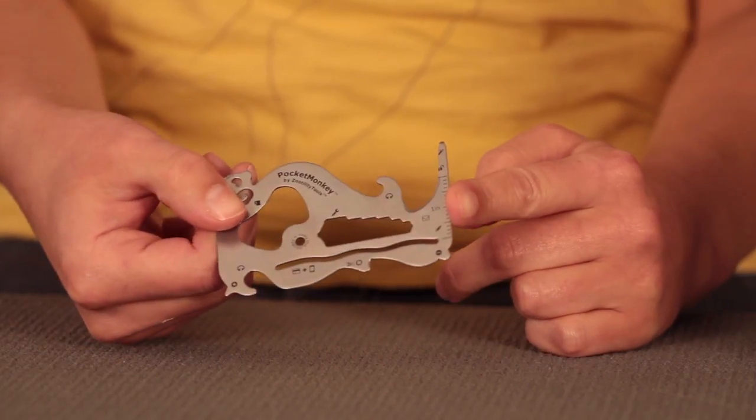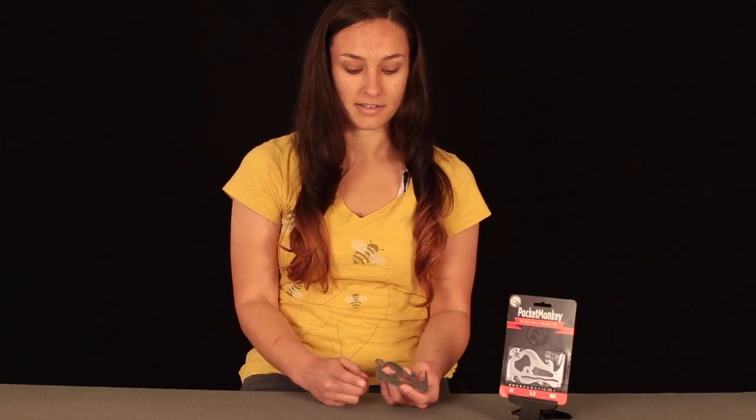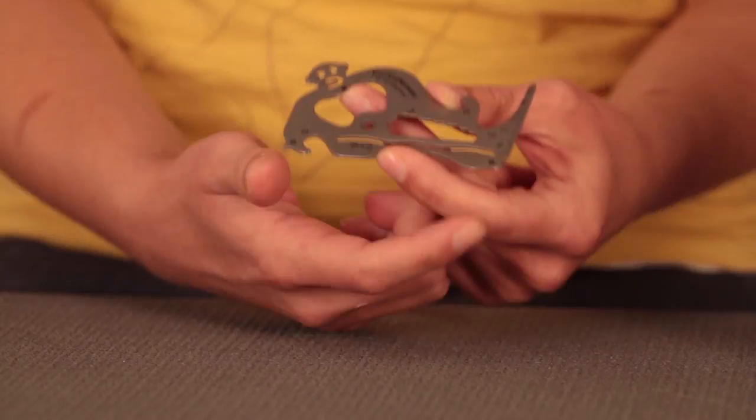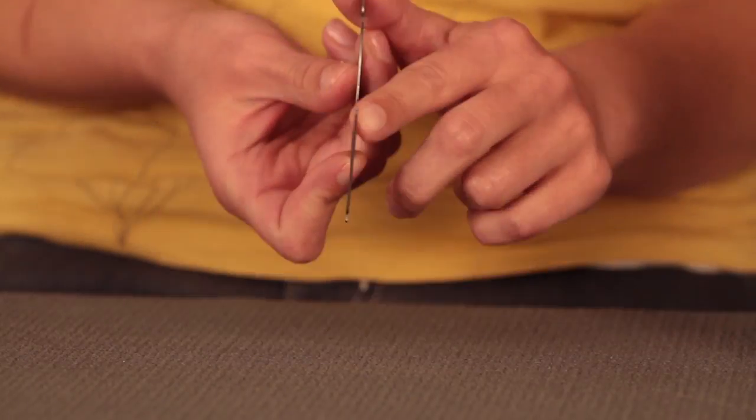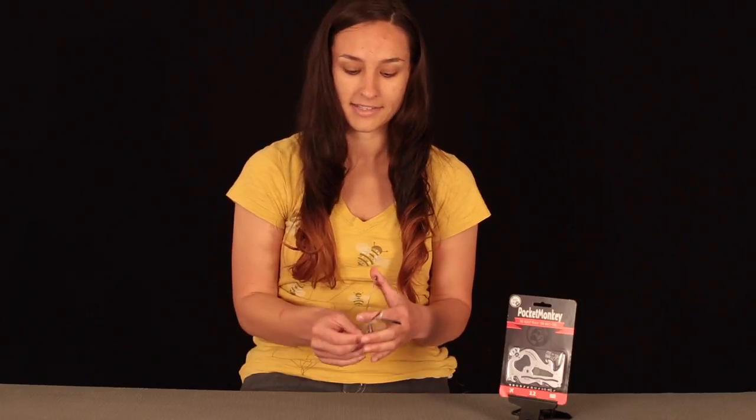Most importantly, it has a bottle opener here. One inch ruler on this side, on the other side it shows it in millimeters. A couple screwdrivers: it has a little Phillips head here, a little flat head here, and a really little micro screwdriver here for things like glasses.